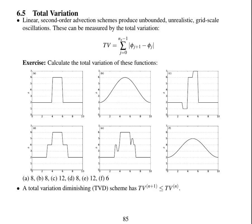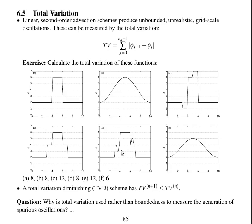So a total variation diminishing scheme... If you started off with a profile like this, you wouldn't get a profile like that because the total variation is increasing. But you might get something that goes from that to that, because the total variation is the same.